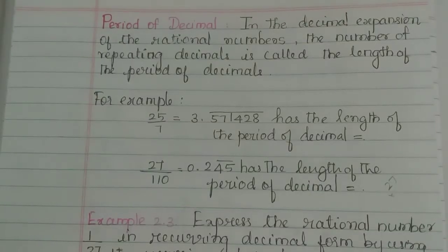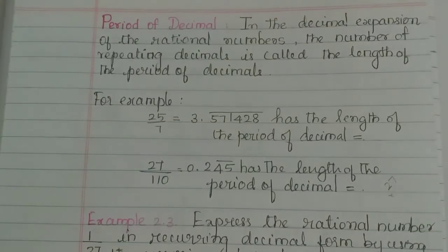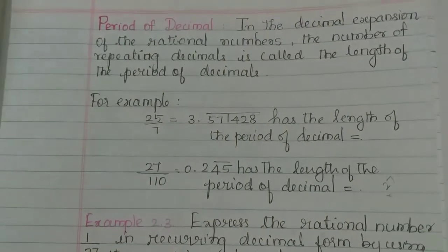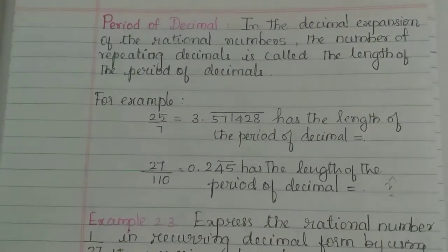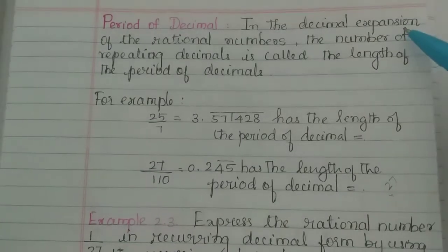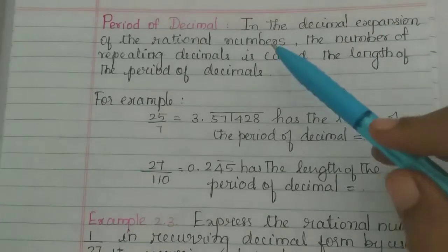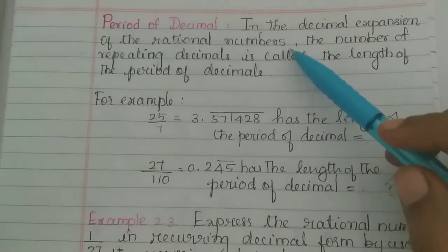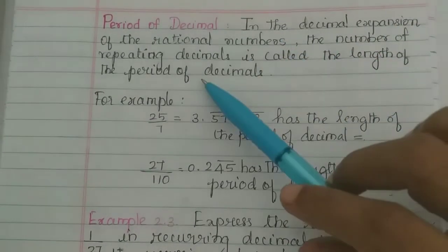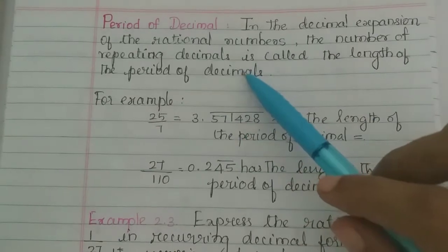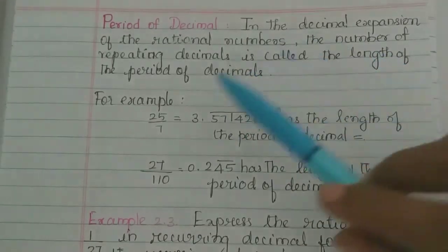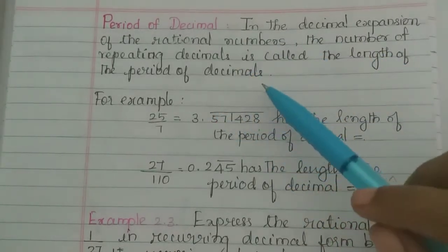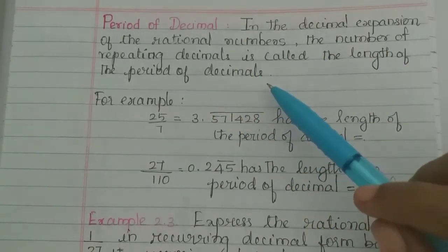Hi students. In this video we will talk about the period of decimal. In the decimal expansion of rational numbers, the number of repeating decimals is called the length of the period of decimals.